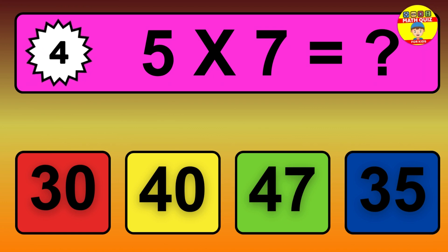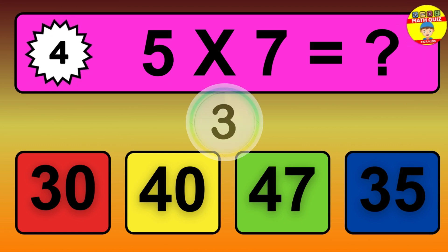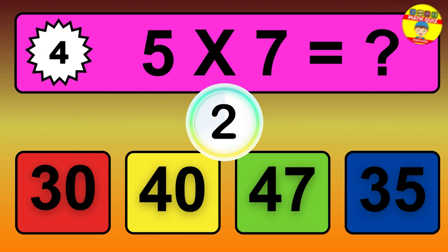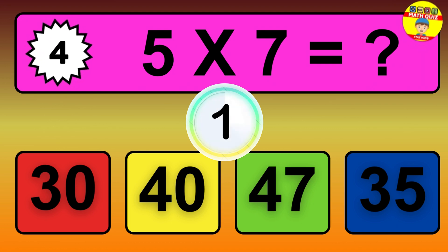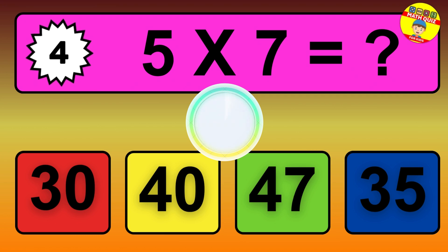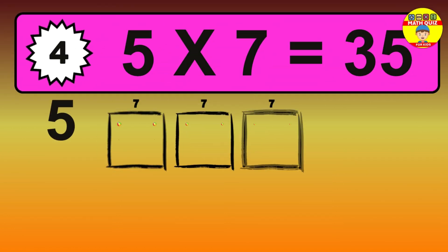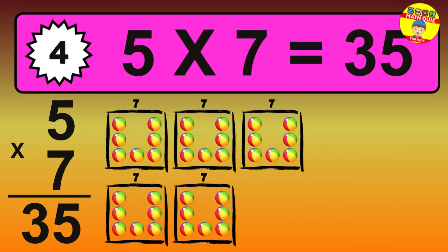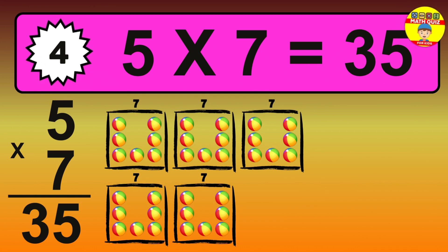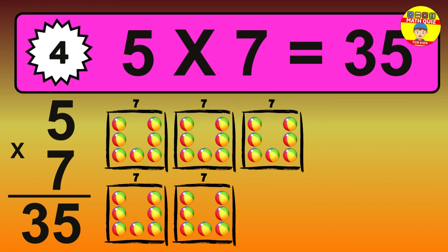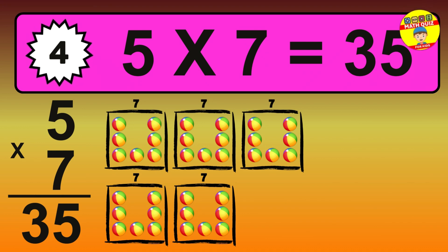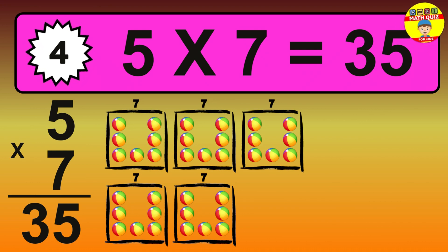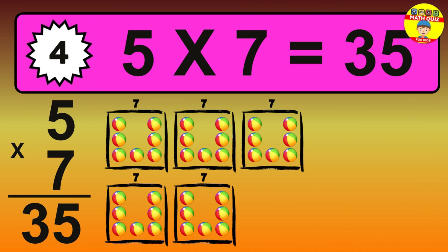Question 4. 5 times 7 equals what? The answer is 5 times 7 is 35. To calculate, we have 5 groups with 7 balls each. So how many balls do we have? 35 balls.